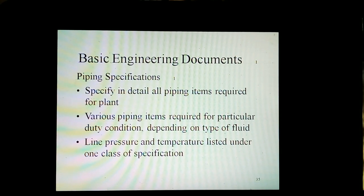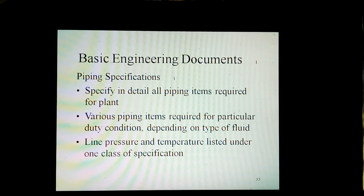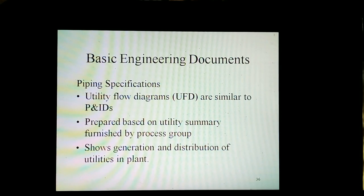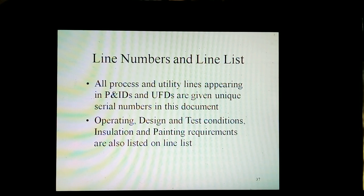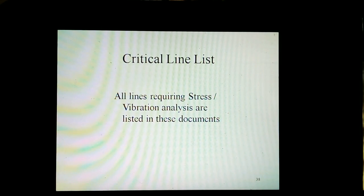Piping specifications specify in detail all piping items required for a plant. Various piping items required for a particular unit condition depending on type of fluid, line pressure, and temperature are listed under one class specification. Utility flow diagrams (UFDs) are similar to P&IDs and are prepared based on utility summaries furnished by the process group, showing generation and distribution of utilities in the plant. All process and utility lines appearing in P&IDs and UFDs are given unique serial numbers in the line list, with operating, design, and test conditions. Insulation and painting requirements are also listed. All lines requiring stress and vibration analysis are listed in the critical line list.